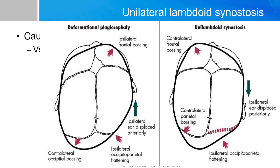The positional plagiocephaly will usually cause a parallelogram shape with unilateral flattening of the occiput, ipsilateral frontal bossing, and anterior displacement of the ipsilateral ear.